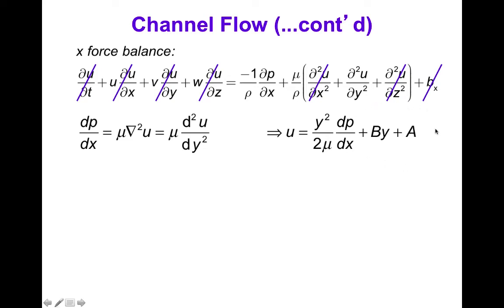We can now use the boundary conditions to solve for a and b. Recall the boundary conditions are that y equals plus or minus a, u is zero, so that means that b must be zero here. And a turns out to be minus a squared over 2 mu dp dx, so that when y equals a and minus a, these terms cancel out and we satisfy the no-flux boundary condition.